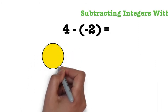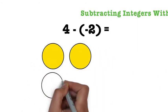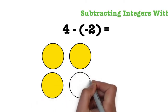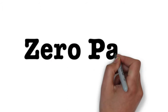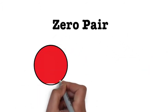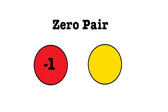To set this problem up, we start with 4 positives, which means we need four yellow circles or four positive counters. We are being asked to remove two negative counters, which we cannot do because there are no negative counters. When this happens, we have to add a zero pair. A zero pair is a set of one positive counter and one negative counter. It is called a zero pair because negative 1 plus 1 equals zero.